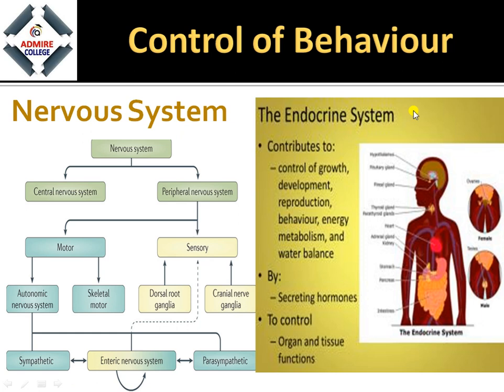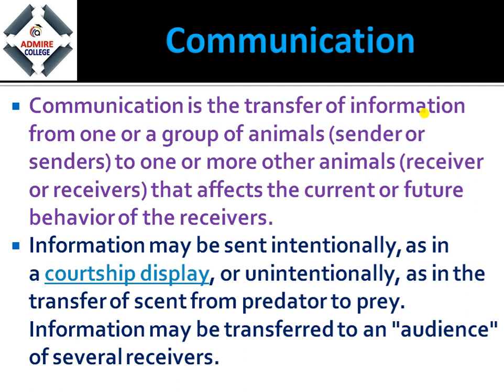Next is control of behavior. If a long question comes asking you to write a note on control behavior, you must explain two things: the nervous system and the endocrine system. The nervous system includes the brain and spinal cord with different neurons — motor and sensory. The endocrine system consists of endocrine glands; for example, epinephrine and norepinephrine in our body regulate our mood and emotions during fight-or-flight conditions. Different hormones help the body perform actions in different ways.